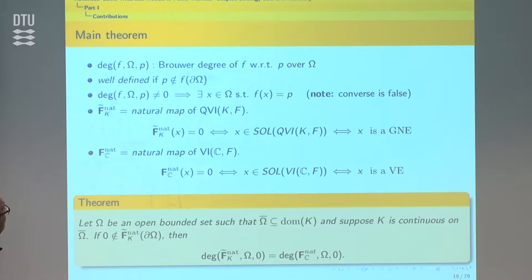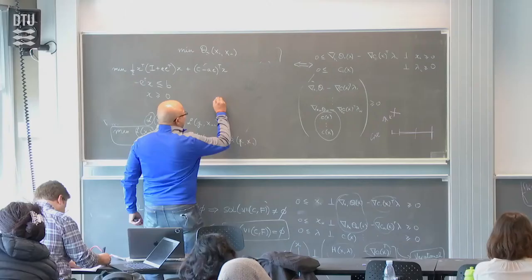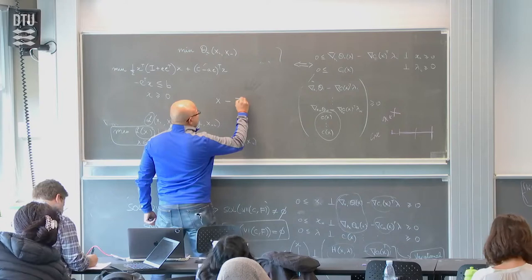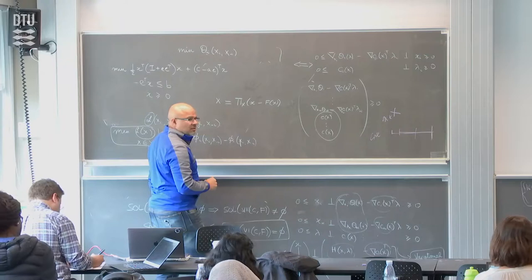If the degree is non-zero, then there exists an X in omega such that F of X equals P. Remember, if there is no X, it does not mean the degree is zero. The way we address this is by looking at natural maps. In the context of standard VIs, to show existence we use a natural map: X minus the projection onto X minus F of X. We needed a zero of this, which was equivalent to finding a fixed point.